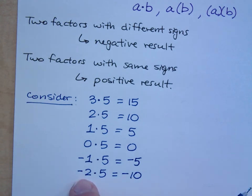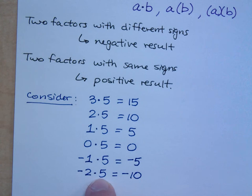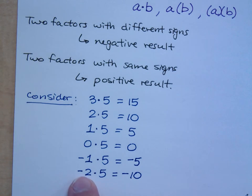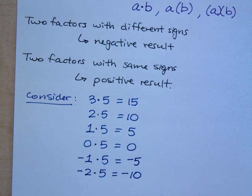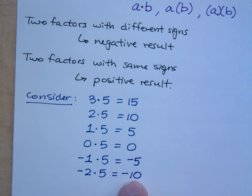Think about this: negative two, you can see this as a loss of two. If you lose two five times, you've lost ten — right? If you lose two pounds five different times, you've lost ten pounds.